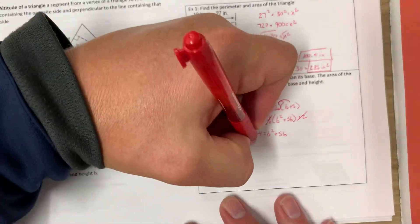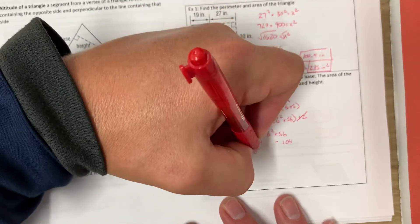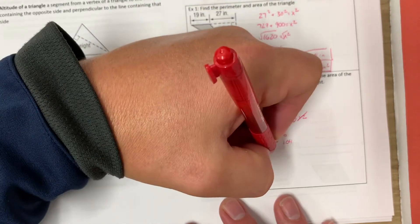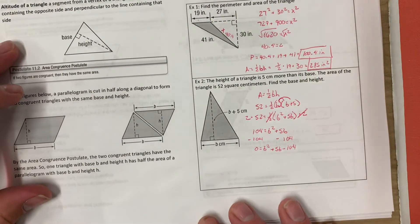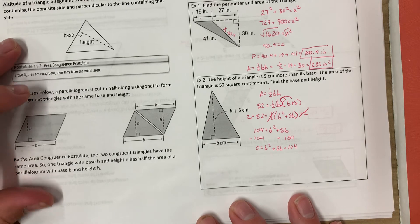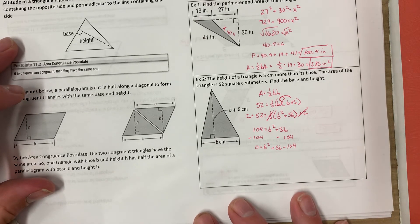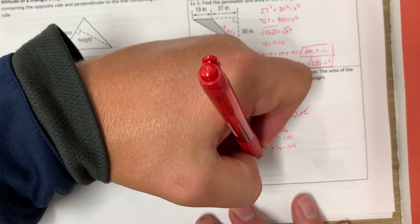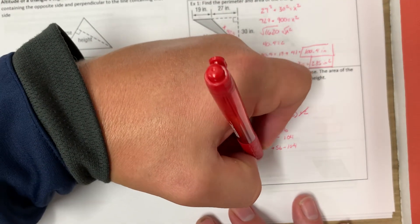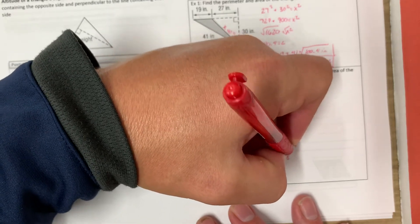Now I've got to subtract 104 to make it a quadratic equation. So we have zero equals B squared plus 5B minus 104. And now I've got to factor. So when we factor, we need to multiply to negative 104 and add up to 5. So that would be 13 and negative 8. B plus 13 and B minus 8.